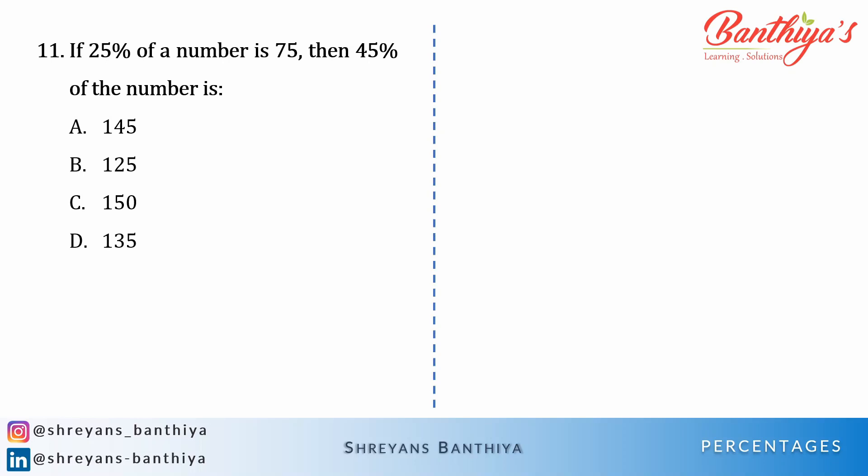If 25% of a number is 75, then 45% of that number is — now usually such kinds of questions are asked and these are very easy questions. So let's see the solution. Let x be the number.